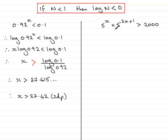5 to the power x multiplied by 5 to the 2x plus 1, which is greater than 2,000. We've got two exponential functions being multiplied together. They are in the same base, in this case base 5. So we can use the addition rule for indices. That is that we can add the powers together and we get x plus 2x becomes 3x and then you've got the plus 1. So you have 5 to the power of 3x plus 1 is greater than 2,000.